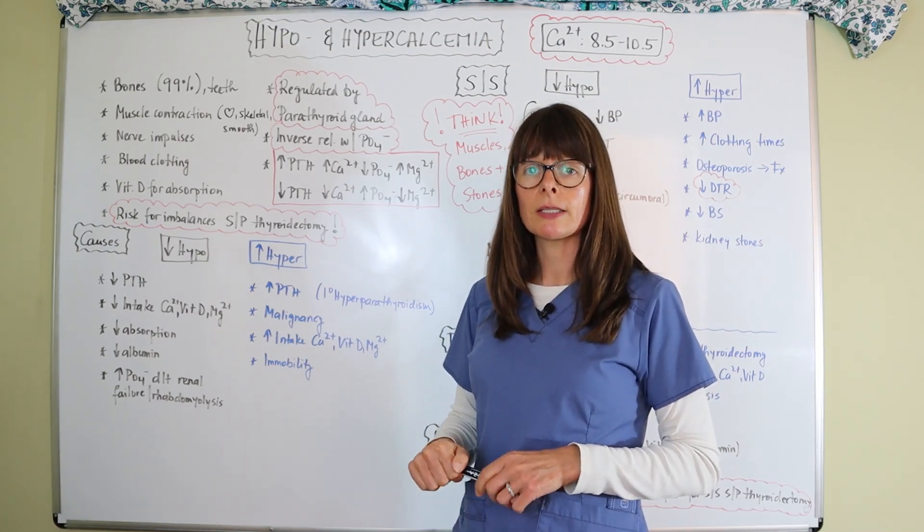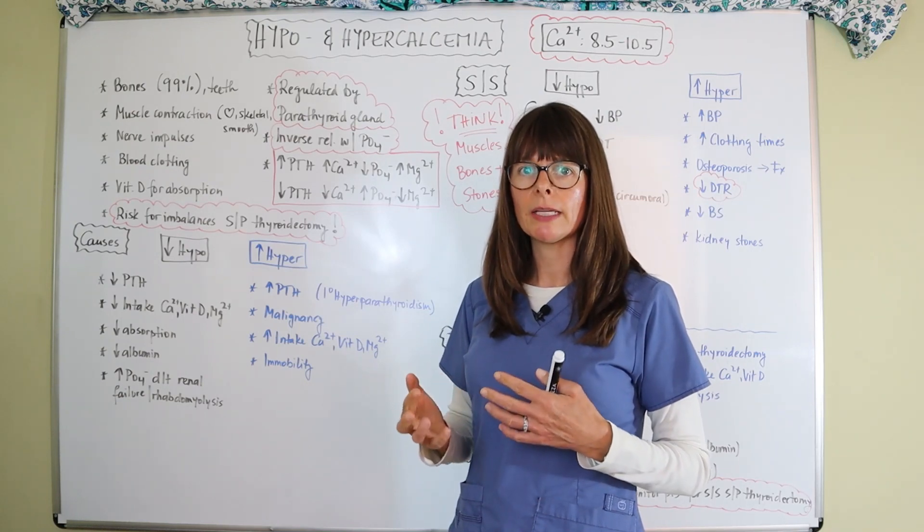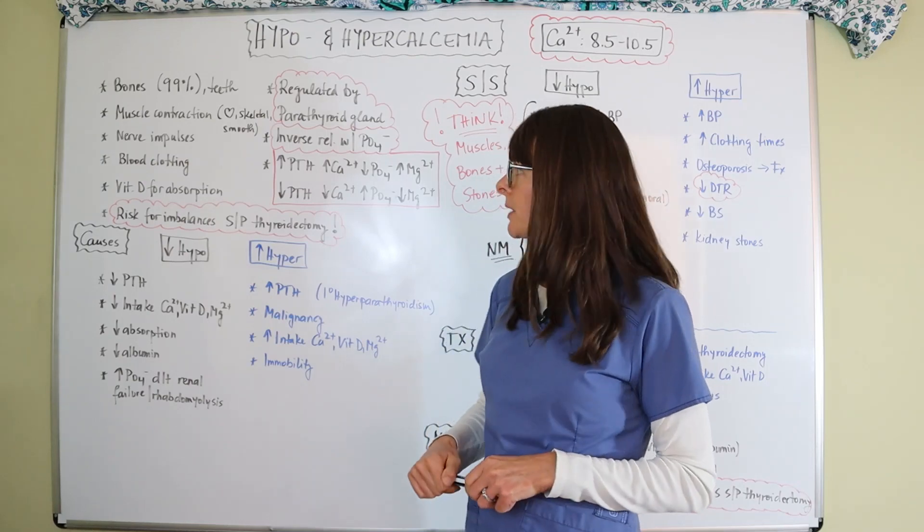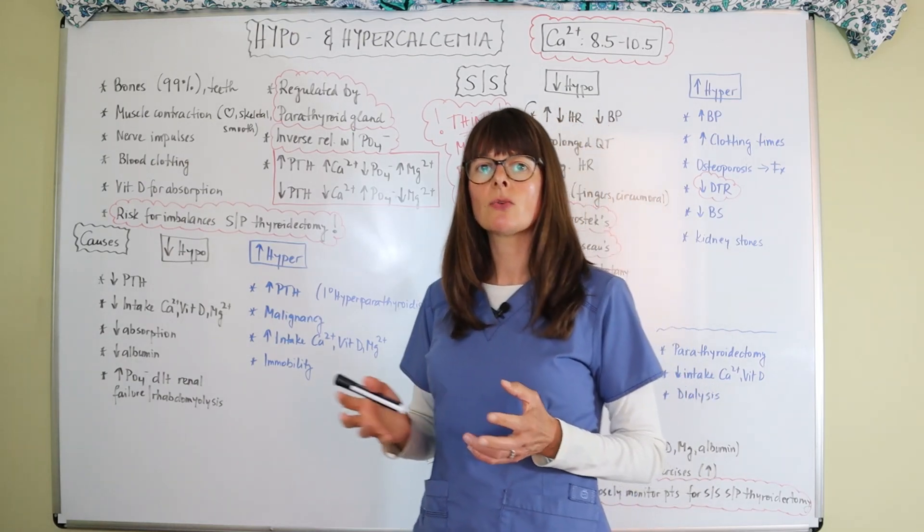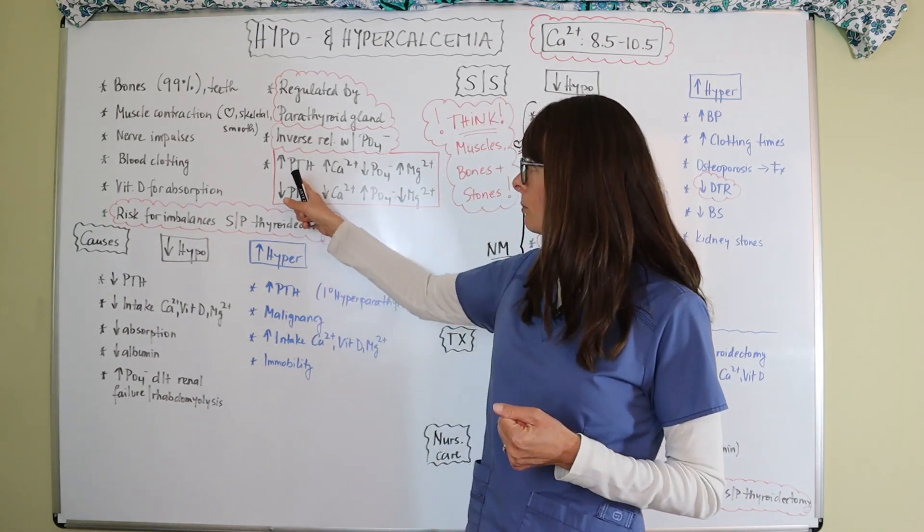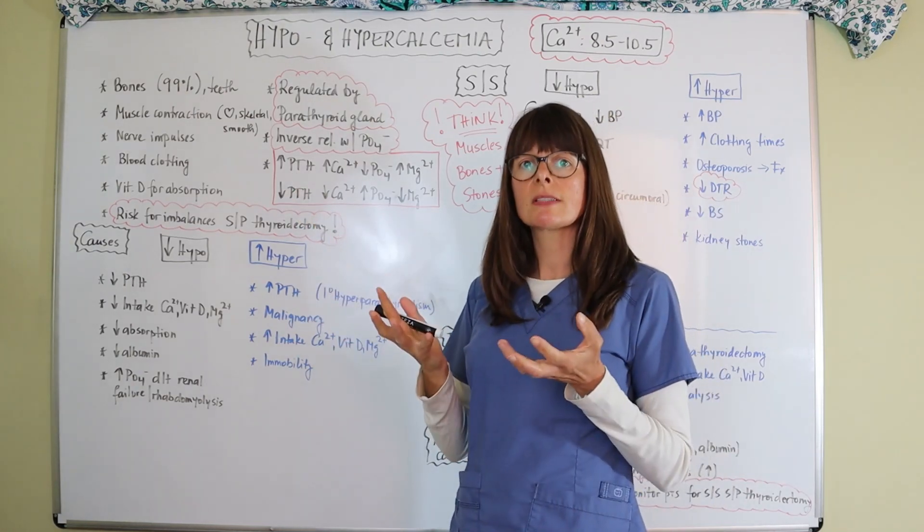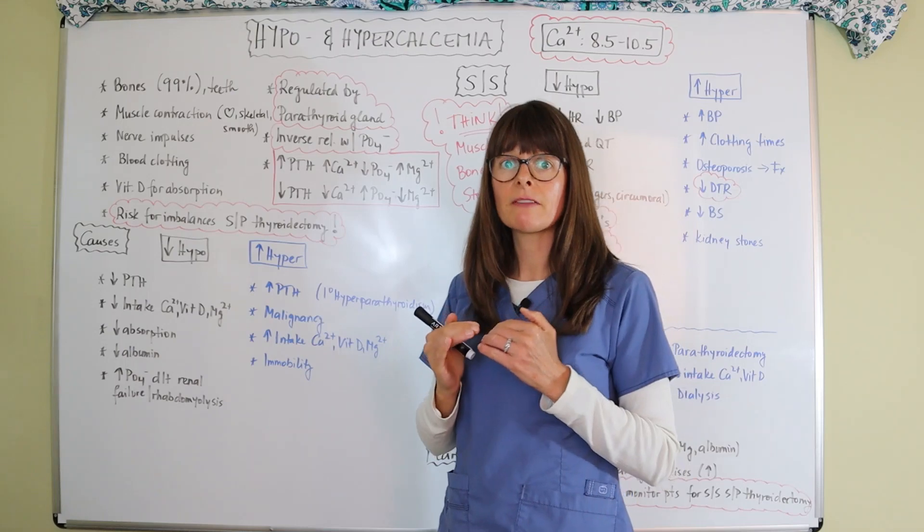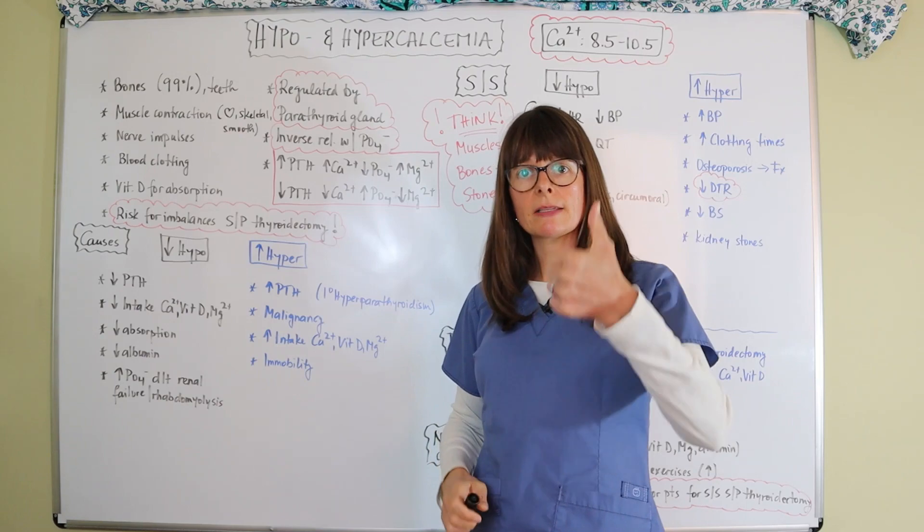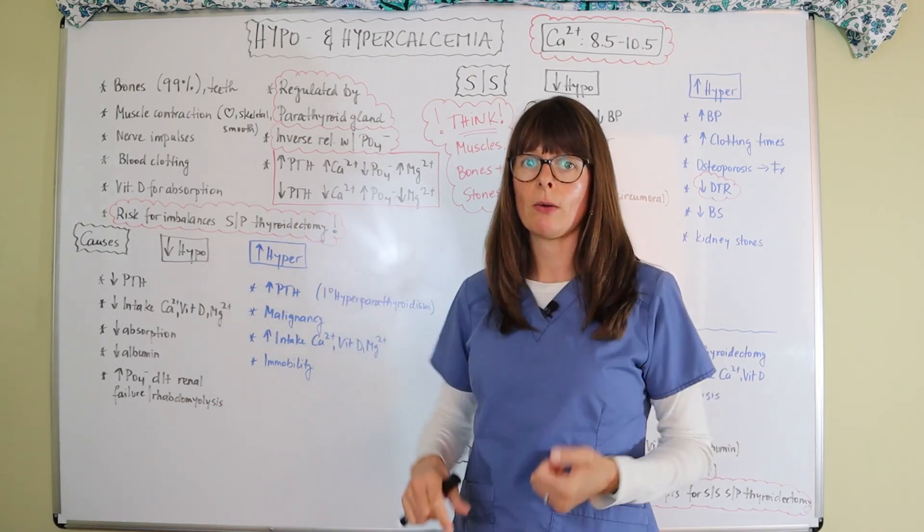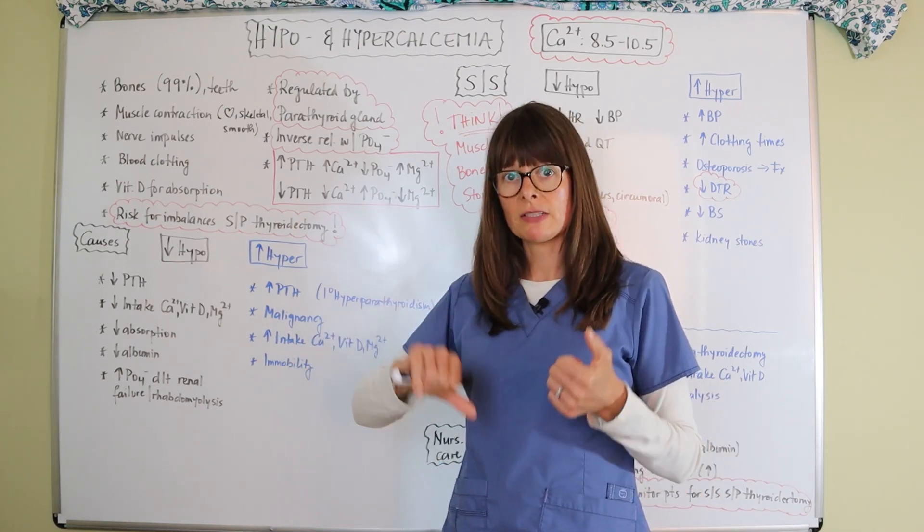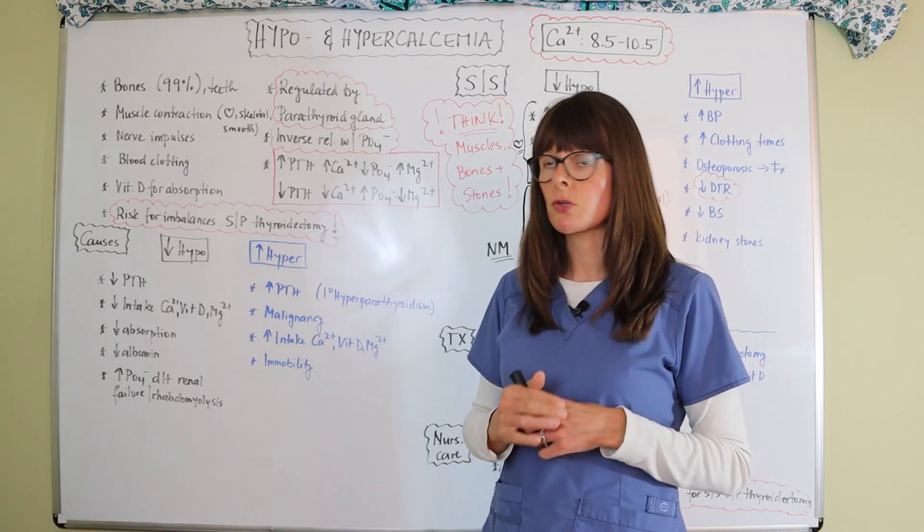What the parathyroid glands do is they regulate how our body processes the calcium in our bodies. So this parathyroid gland in response to low serum calcium levels will release parathyroid hormone, PTH, which will then increase the calcium in the serum. And calcium and phosphate have an inverse relationship. So whenever calcium goes up, phosphorus levels go down. When the parathyroid gland gets stimulated, calcium levels go up and phosphate levels go down.